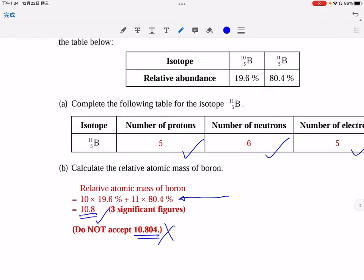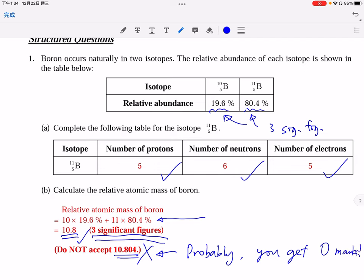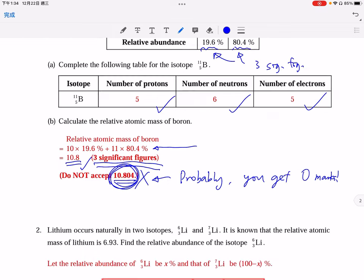So why? Talk about it one more time. It is because the data from the question are just correct to 3 significant figures, so your answer should also follow this. And make sure you know, in examination you probably get 0 mark. Make sure you know, in case you write wrong answers like this.